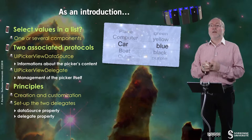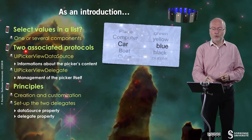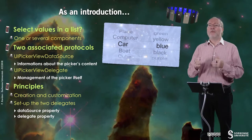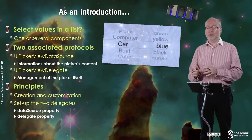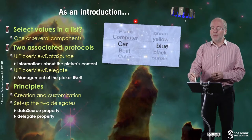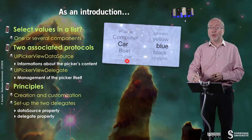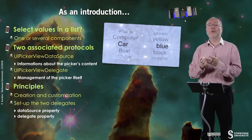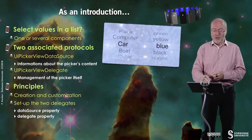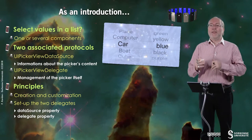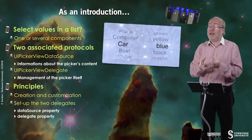This is called a UI Picker View, and you have two associated protocols. The first one is UI Picker View Data Source, which provides information about the picker contents — basically how many columns, called components, you have, and for each component how many values you have. The second protocol is UI Picker View Delegate, which handles the changing of values and the values themselves.